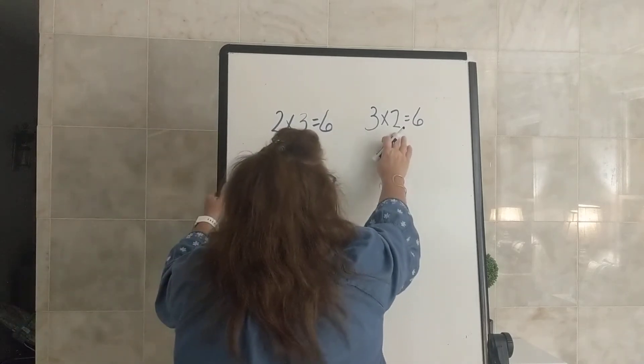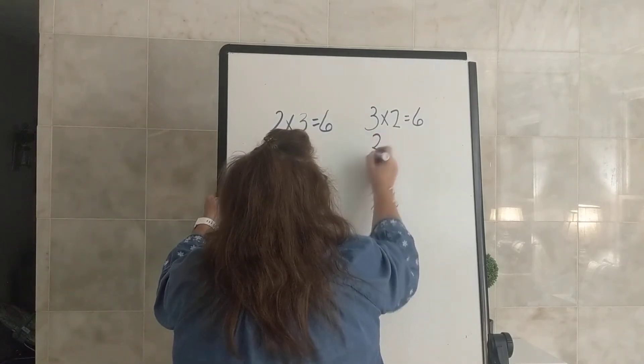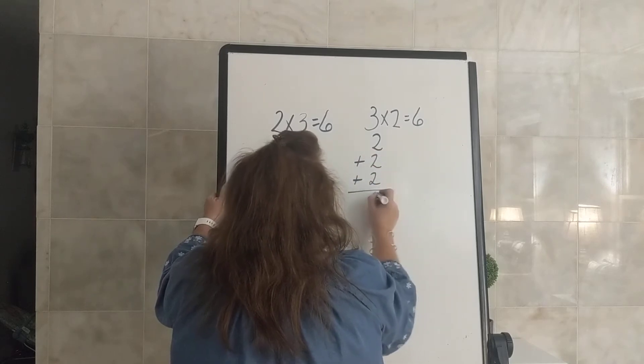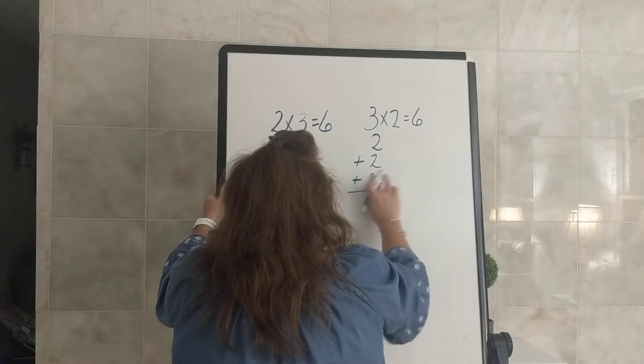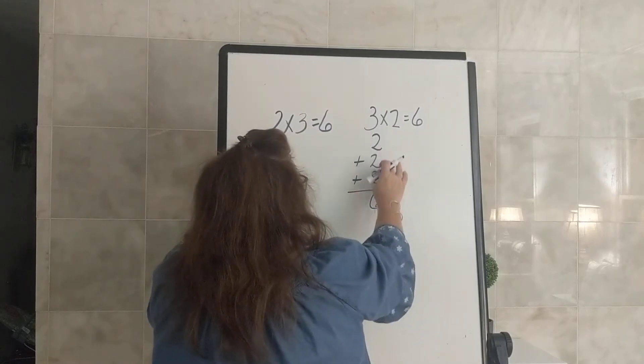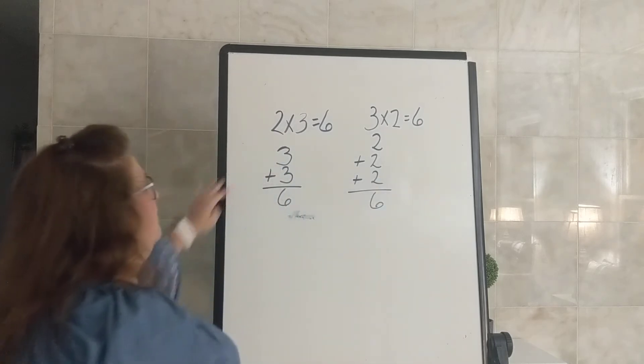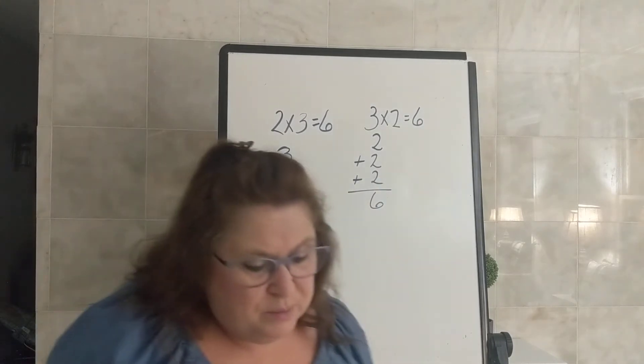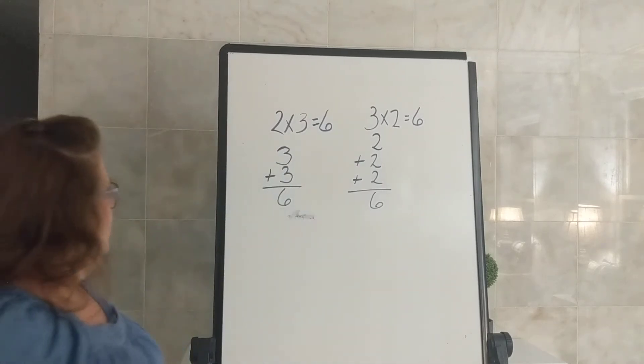Or we can add 2 three times and say 2 plus 2 plus 2 equals 6. So that is like skip counting as well, 2, 4, 6. So this is the four ways that we illustrate or show a multiplication fact. Let's do another one.